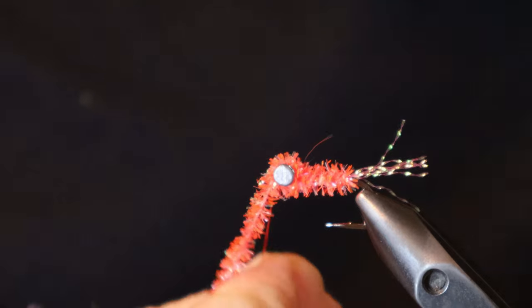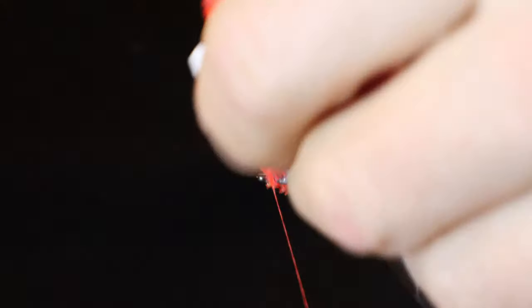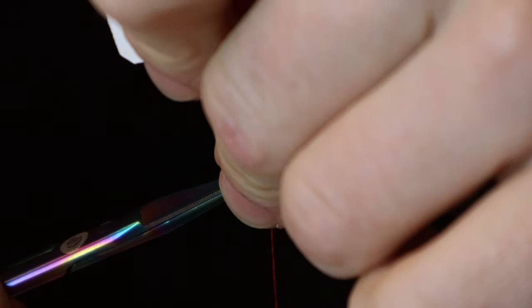Then you can tie off at the front of the hook and all there's left to do is whip finish and you're good to go to hit the beaches.